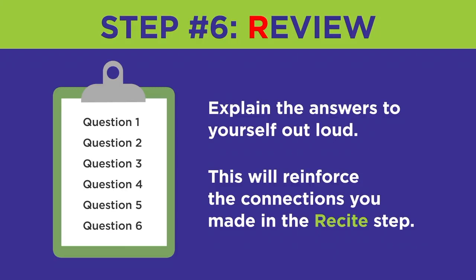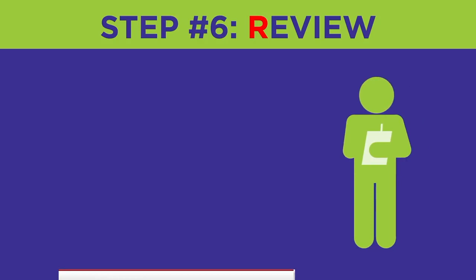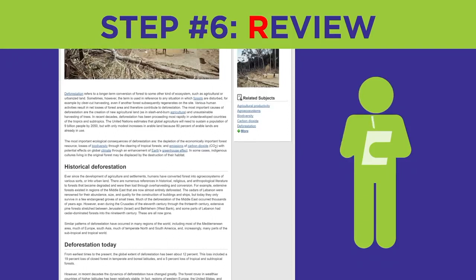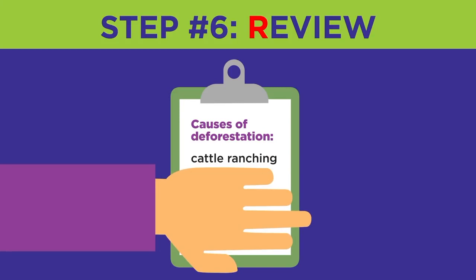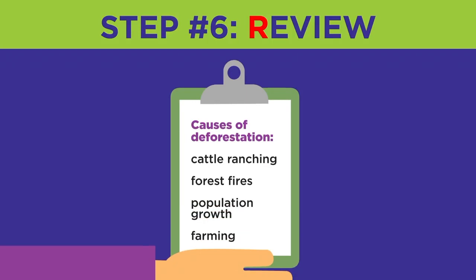Then, consult your notes or even go back and re-read certain sections until you are confident that you know the information. For example, check your understanding by listing the causes of deforestation out loud: cattle ranching, forest fires, population growth, and farming. If you're still unsure or confused about what you read, you may need to ask your teacher or consult another source to get your questions answered.